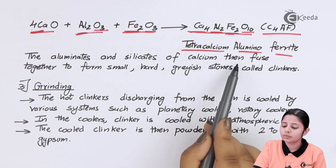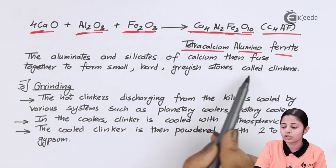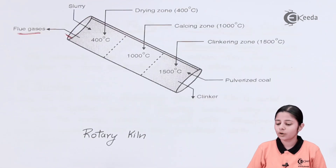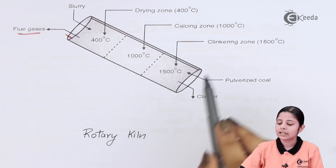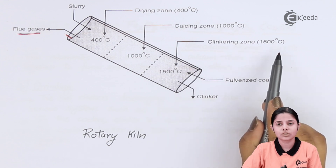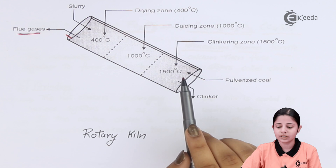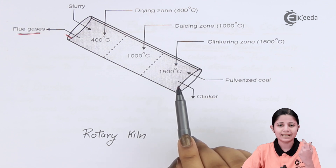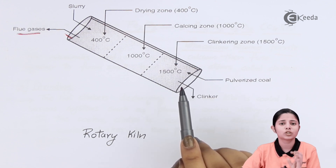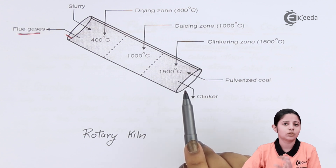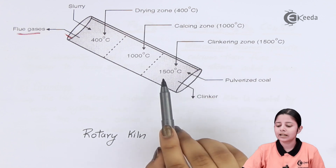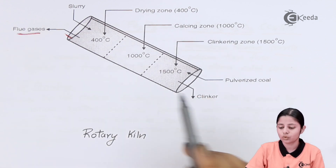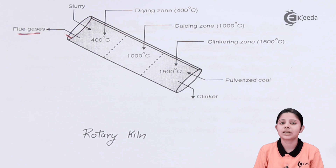The aluminates and silicates of calcium fuse together to form small hard grayish stones called clinkers. In the diagram, the bottom-most stage of the rotary kiln is the clinkering zone at 1500 to 1700°C, where all these reactions take place. Unlike the calcination zone, the clinkering zone produces no flue gases — the reactions forming C2S, C3S, C3A, and C4AF have only solid products with no gaseous byproducts. The only flue gas produced in the entire process is CO2 from the calcination zone.